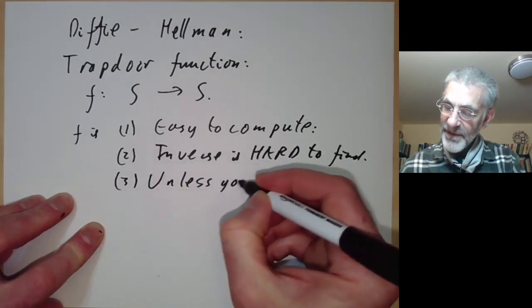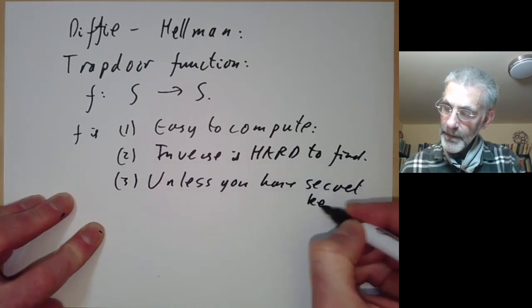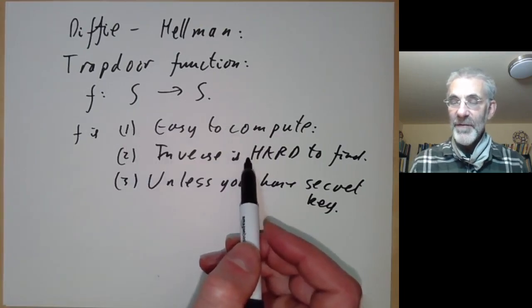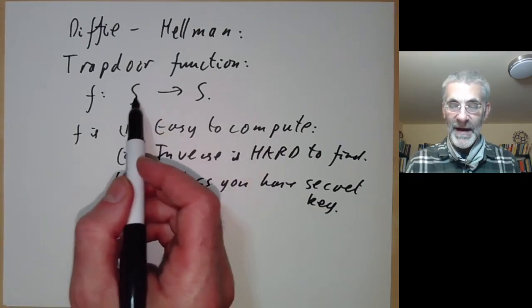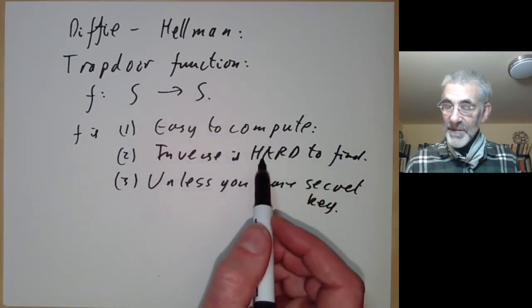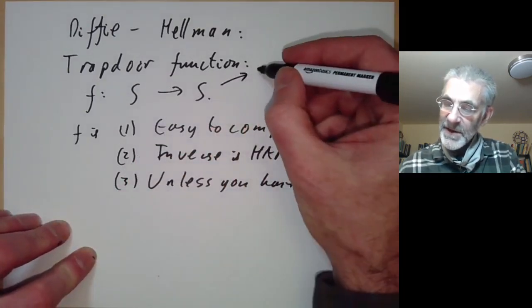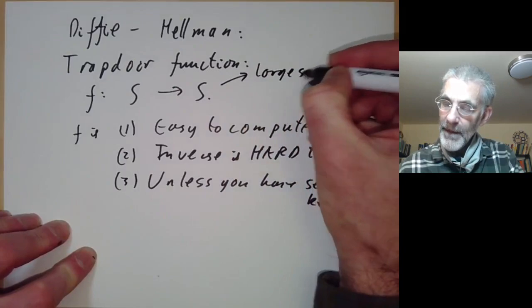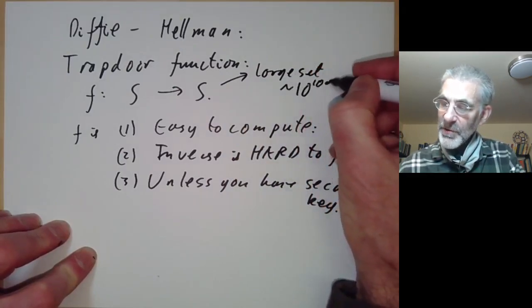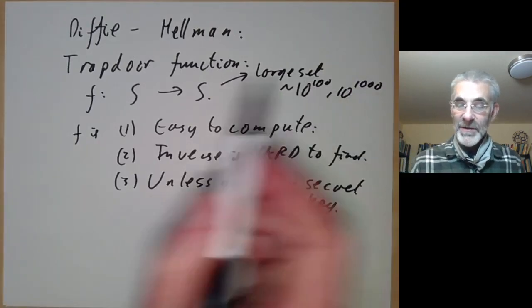Unless you have a secret key. If you can compute f, why can't you compute the inverse by trying all elements of S and applying f to them? In order for the inverse to be hard to compute, S needs to be very large—S has to be some large set, might typically have say 10 to the 100 or maybe 10 to the 1000 elements.